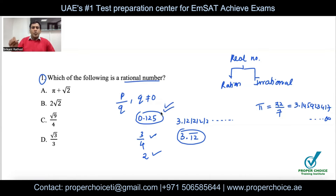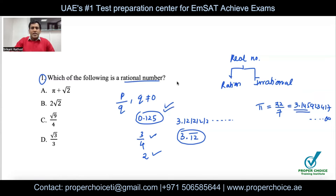If the digits after the decimal point are repeating — like 12, 12, 12 — it is rational. Only if the digits after the decimal are not repeating is the number irrational. All non-perfect square numbers and non-perfect cube numbers are irrational numbers.